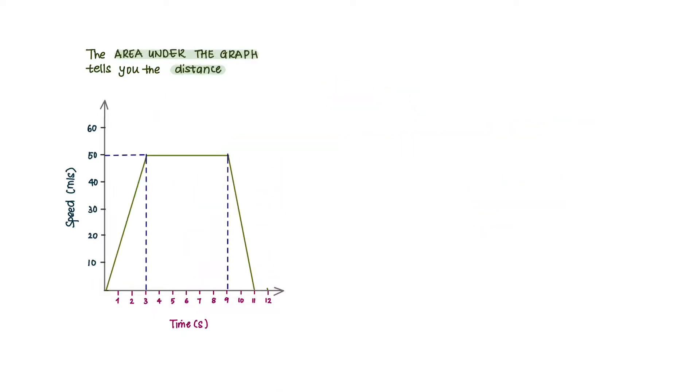Extra information that can be found in speed-time graphs is the distance traveled. The distance traveled by an object can be found by determining the area beneath the graph.